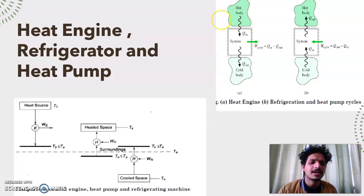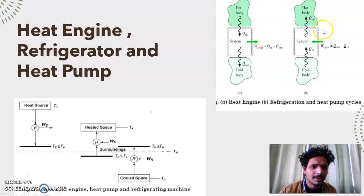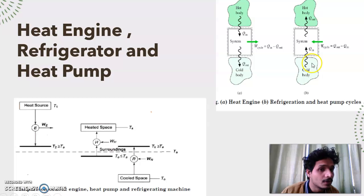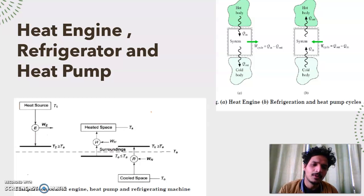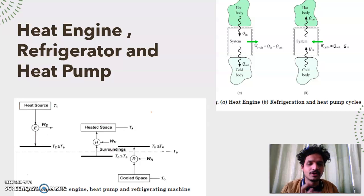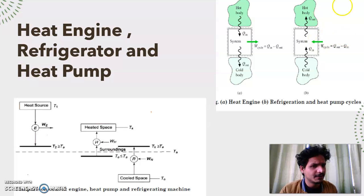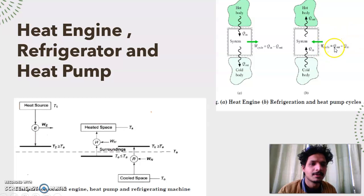A heat engine is a work-producing device. Now, if you reverse the working of a heat engine, what will happen is you will be reversing the whole cycle. It will look like this: heat will be extracted from the cold body, you will give some work input to the system, and the work input along with the heat extracted from the lower temperature body will be supplied to the hot body.